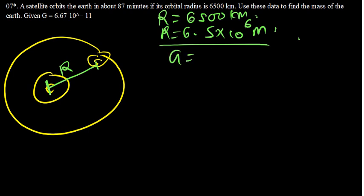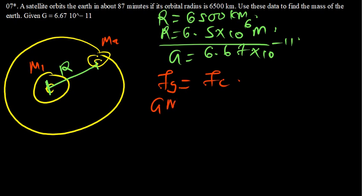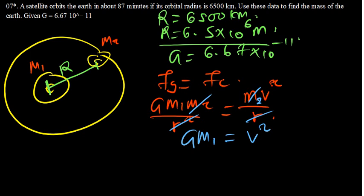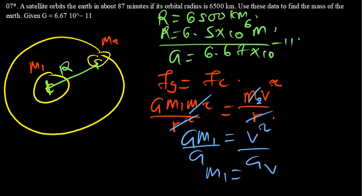We're given G equals 6.67 times 10 to the power negative 11. We set up the equation: Fg equals the centripetal force, giving G times M1 times M2 divided by R squared equals M2 times V squared divided by R. Cancelling M2 and one factor of R, we get G times M1 equals V squared times R, so M1 equals V squared times R divided by G.